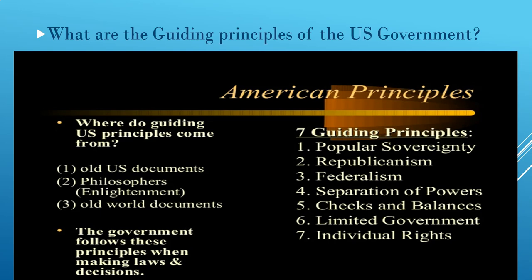What are the guiding principles of the US government, and where did they come from? Many of the guiding principles we have here in the United States come from old US documents, old world documents, and from philosophers — especially Enlightenment thinkers. For example, Montesquieu said that the government had to be divided in order to limit its power. All of those documents and ideas have contributed to the guiding principles of the United States.